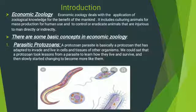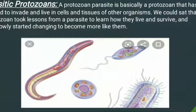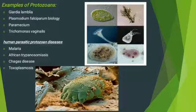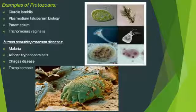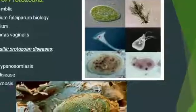The first basic concept is parasitic protozoans. A protozoan parasite is a protozoan that has adapted to invade and live in cells and tissues of organisms. We could say that a protozoan adopted characteristics of a parasite to learn how to live and survive. Examples of parasitic protozoans include Giardia lamblia, Plasmodium, and Paramecium, with pictures of these organisms shown here.